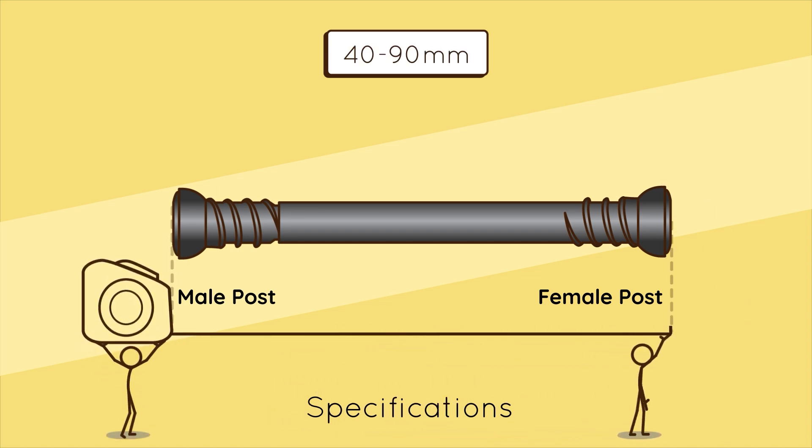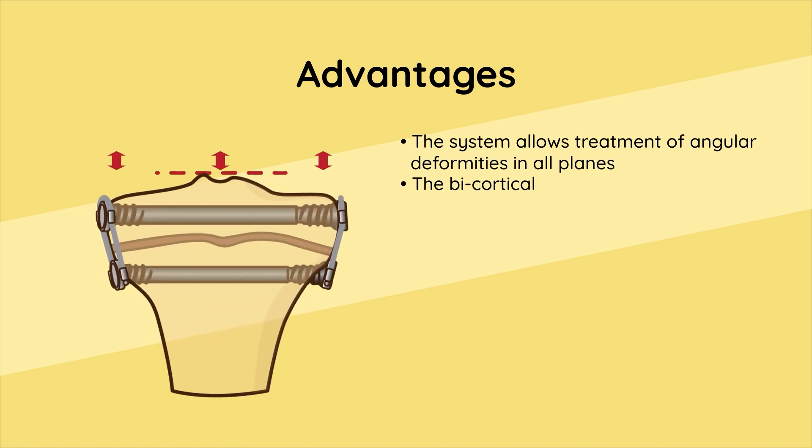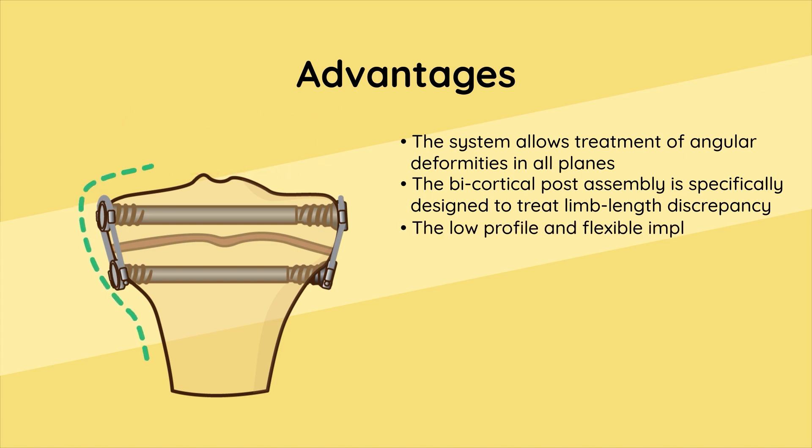Advantages: The system allows treatment of angular deformities in all planes. The bicortical post assembly is specifically designed to treat limb length discrepancy. The low profile and flexible implant assembly allows contouring of the anatomy. A large inventory of gyro sizes is provided to accommodate patient anatomies.